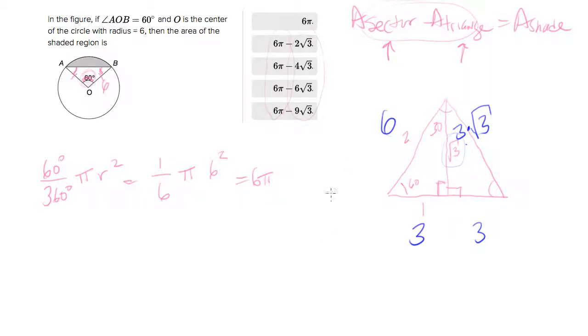So the area of the triangle will be 1/2 × base × height, which equals 1/2 × 6 × 3√3. Cancel the 2 and the 6 to get another 3, and we have 9√3.